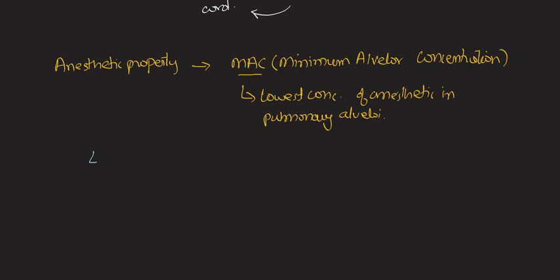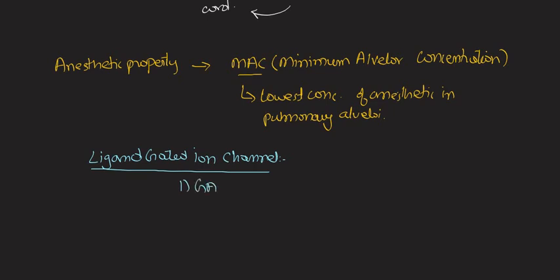Along with MAC, general anaesthetics work on ligand-gated ion channels. As you know in pharmacology there are various types of mechanisms of drug action — receptors, ion channels, enzymes. The major targets of general anaesthetics are these ligand-gated ion channels, particularly GABA and NMDA receptors. These two receptors are involved in the mechanism of action of general anaesthetics.